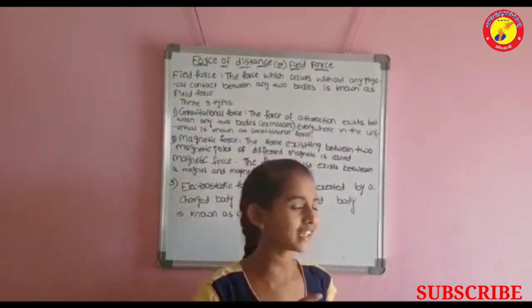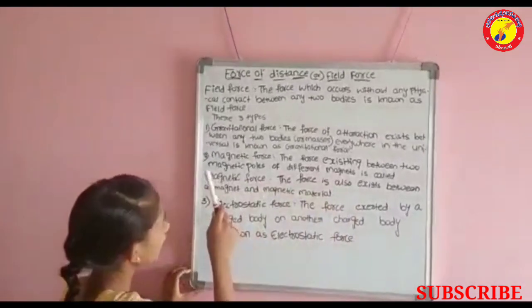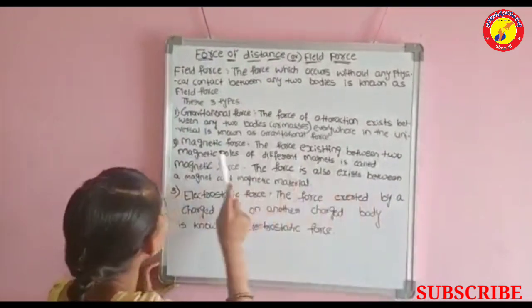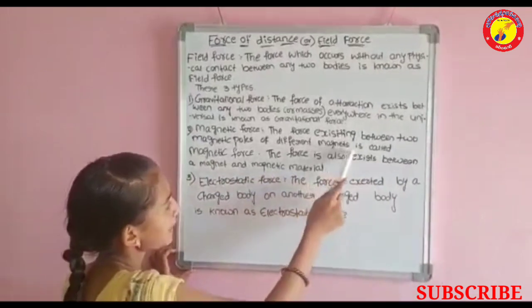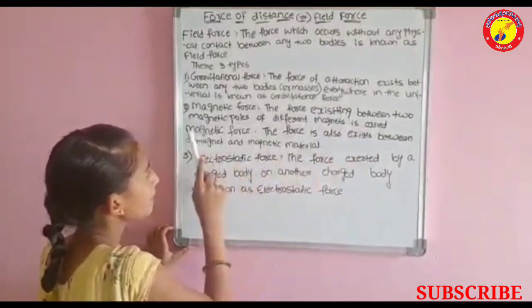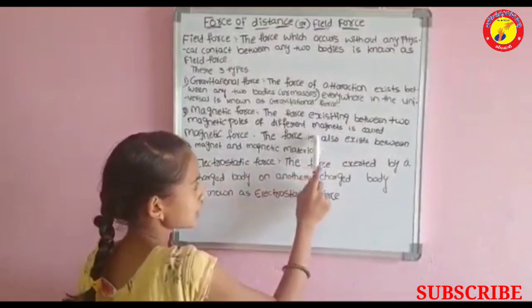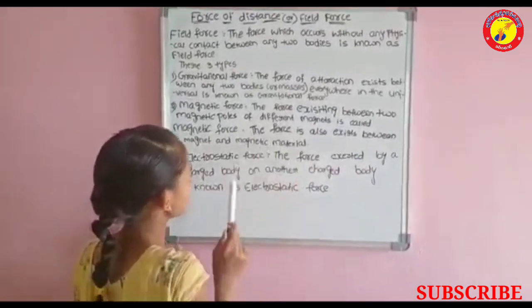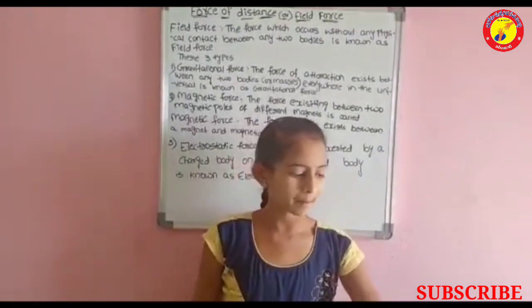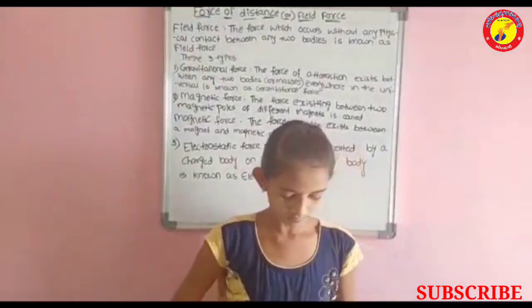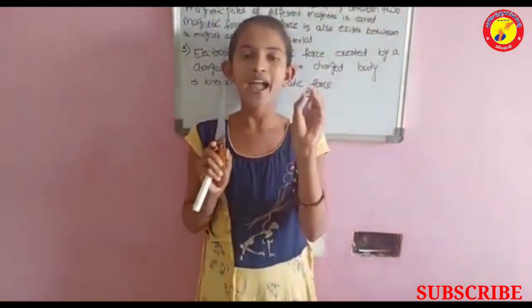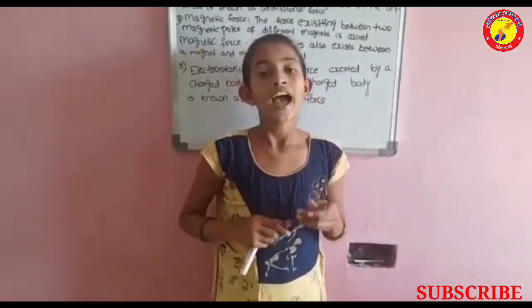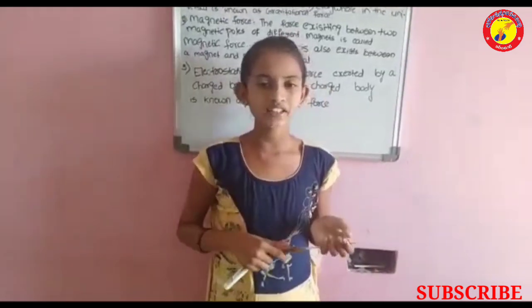And the second one is magnetic force. The force existing between two poles of different magnets is called magnetic force. The force also exists between a magnet and magnetic material. So the magnet and magnetic materials both attract, and a magnet and magnet also attract.